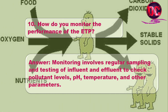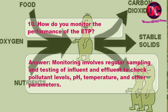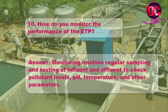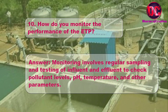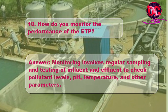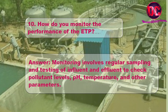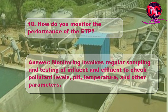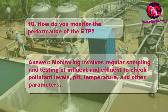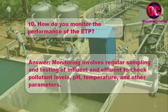10. How do you monitor the performance of the ETP? Answer: Monitoring involves regular sampling and testing of influent and effluent to check pollutant levels, pH, temperature, and other parameters.